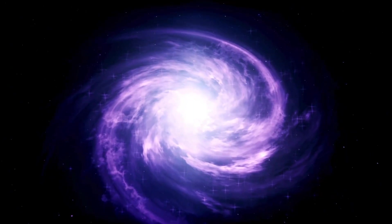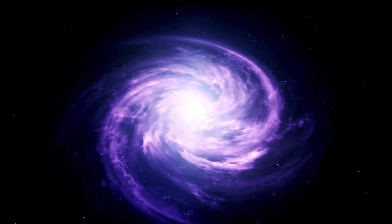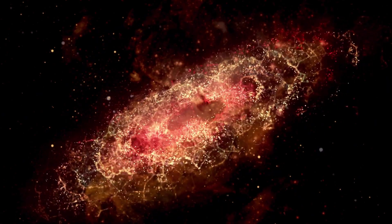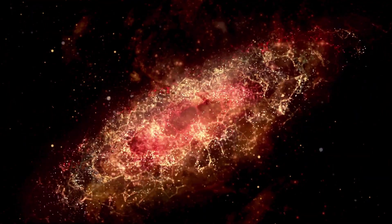Once the supernova occurs, one of three things is formed: either a neutron star, a white dwarf, or if the star is massive enough, a black hole.